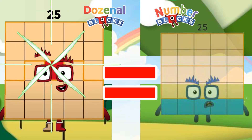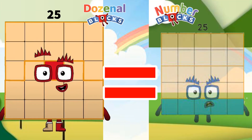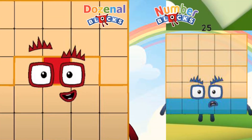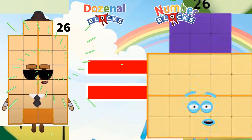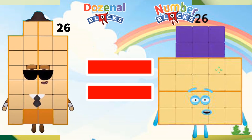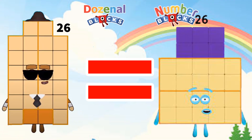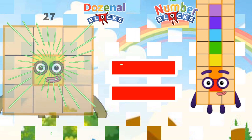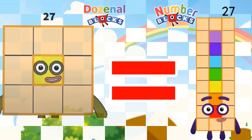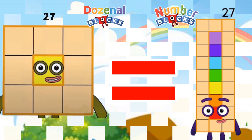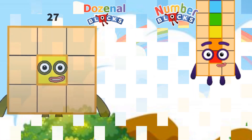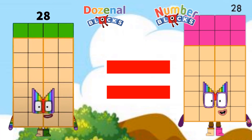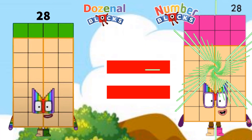Do 1 is equals 25. Do 2 is equals 26. Do 3 is equals 27. Do 4 is equals 28.